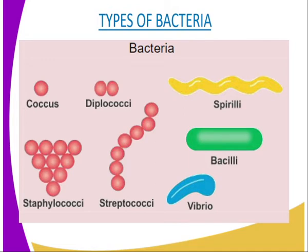Remember we have got other organisms which are eukaryotic, that is the opposite of prokaryotic. The third characteristic of this kingdom is that they have a cell wall but it is not made up of cellulose. Remember we have organisms whereby the cell wall is made up of cellulose, but in the case of the Monera, the cell wall is not made up of cellulose.